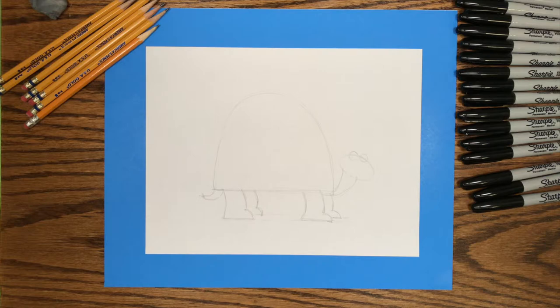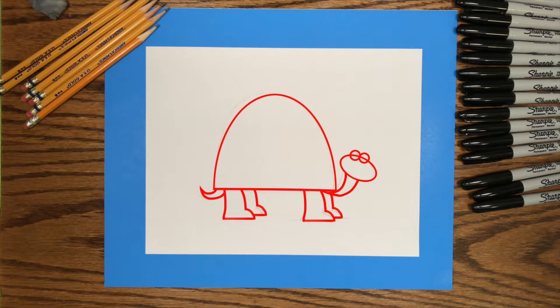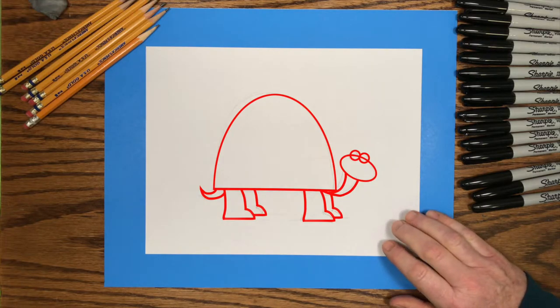If your shapes look something like this, then you're ready to go to the next step, which is to trace the pencil lines with our black marker.